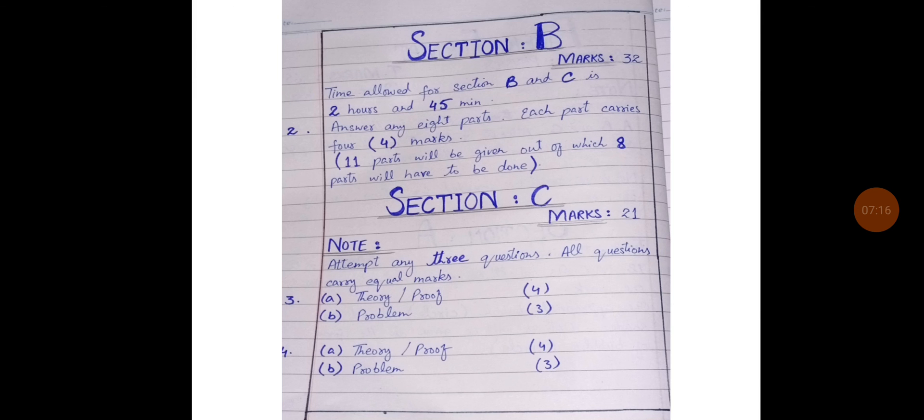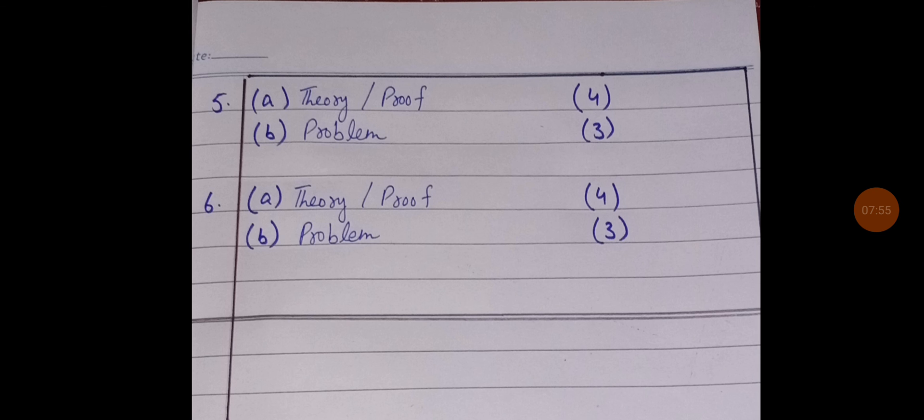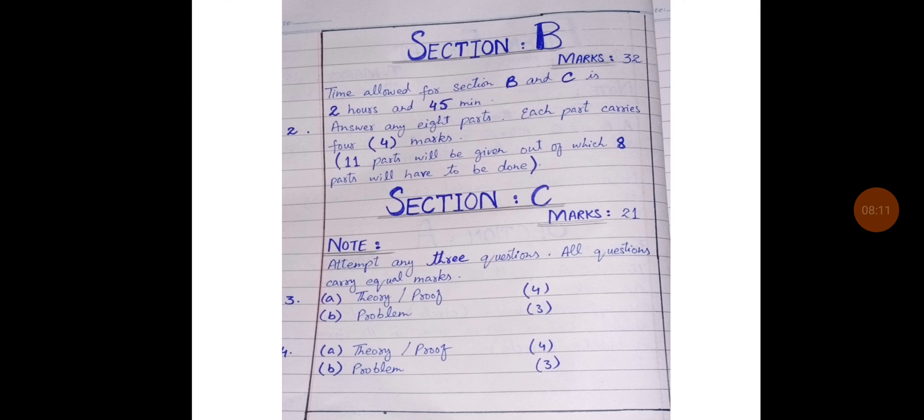Then section C. In section C, marks 21 and there is a note. Attempt any 3 questions. All questions carry equal marks. Question number 3. Every question has 2 parts, A and B. In part A, you will have theory or proof. And in part B, you have the numerical or problem. Each question carry equal marks 7. Same for question number 4, theory part A and part B problem. Then question number 5, it has also same pattern, part A and part B. And then question number 6. Here 4 questions will be given to you and you will solve any 3 questions.